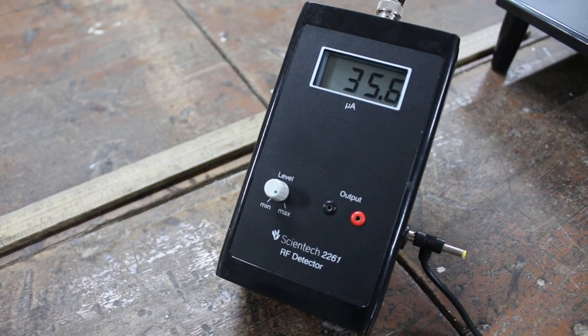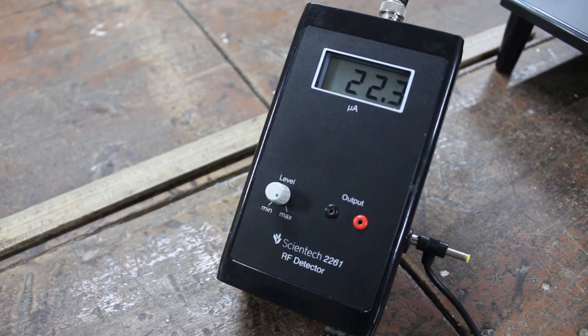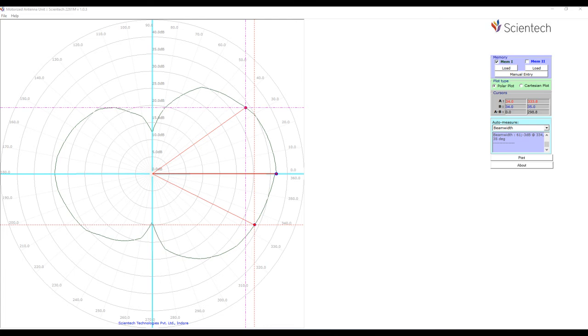After taking all the readings, you can either plot the graph using software which is provided by Scientec or you can draw manually. From the graph you can find out that there are two major lobes and a beam width of 61 degrees. All the necessary material for this practical is available in the description.